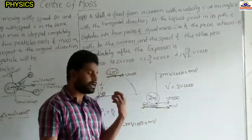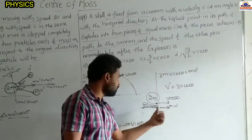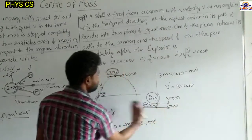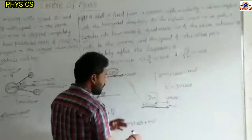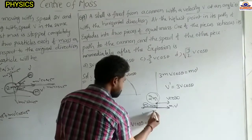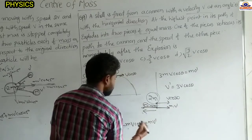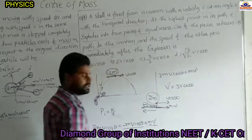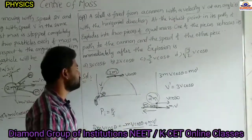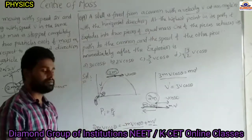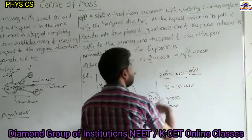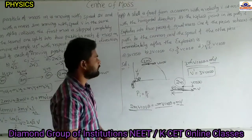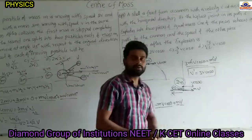Momentum is conserved (internal explosion). Before: 2M·V cosθ. After: M·(−V cosθ) + M·V'. So 2MV cosθ + MV cosθ = MV', giving 3MV cosθ = MV'. Therefore V' = 3V cosθ. The speed of the other piece immediately after the explosion is 3V cosθ. This is also a previous mains question.